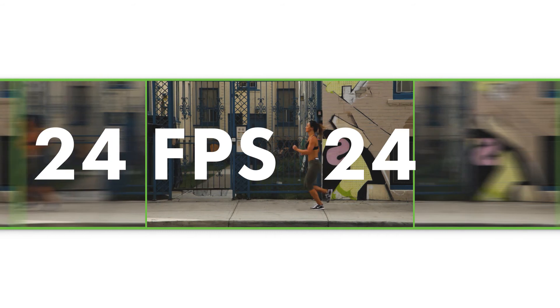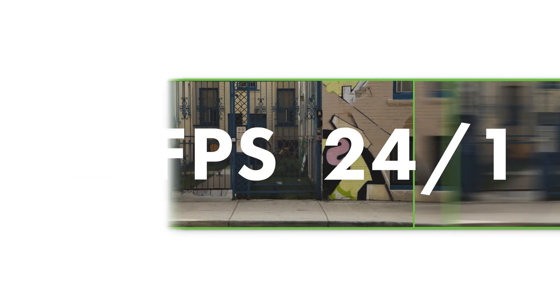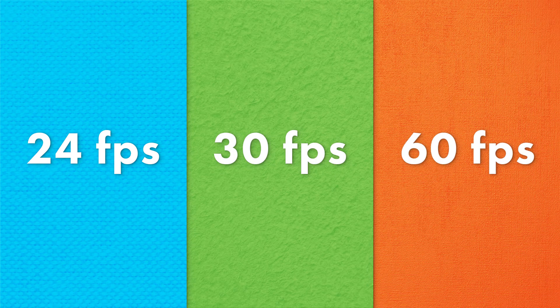If you watch a movie in 24 FPS, you'll be seeing 24 frames every second. Some common frame rates are 24 FPS, 30 FPS, and 60 FPS.